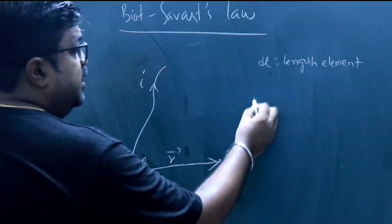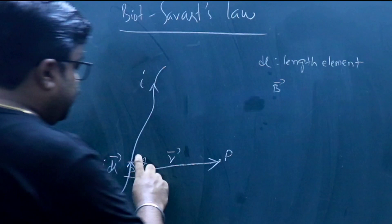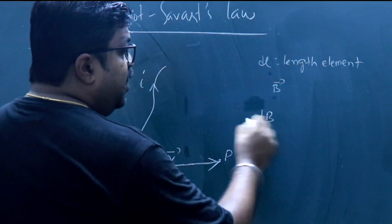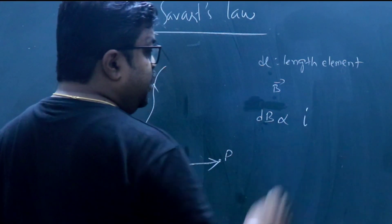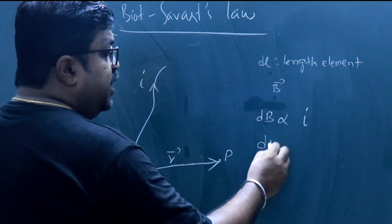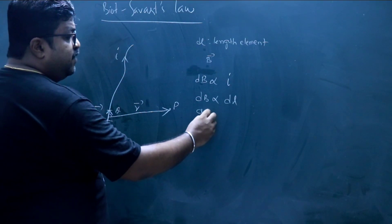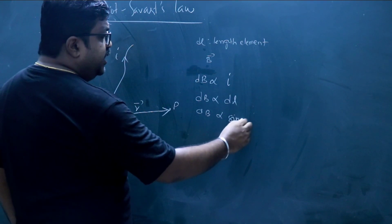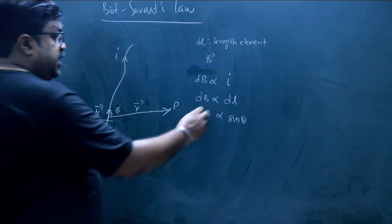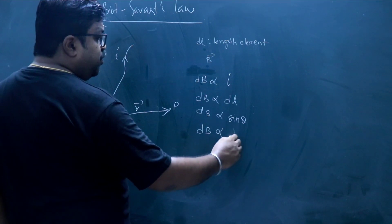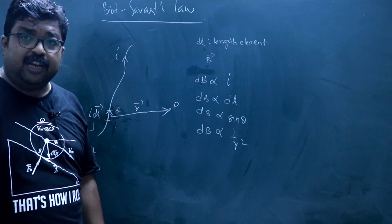Biot-Savart's law states that the strength of the magnetic field dB is proportional to the strength of the current, proportional to the length element dl, proportional to sin theta — where theta is the angle between the current element and the position vector — and inversely proportional to the square of the distance of separation of the point of observation from the small element considered.